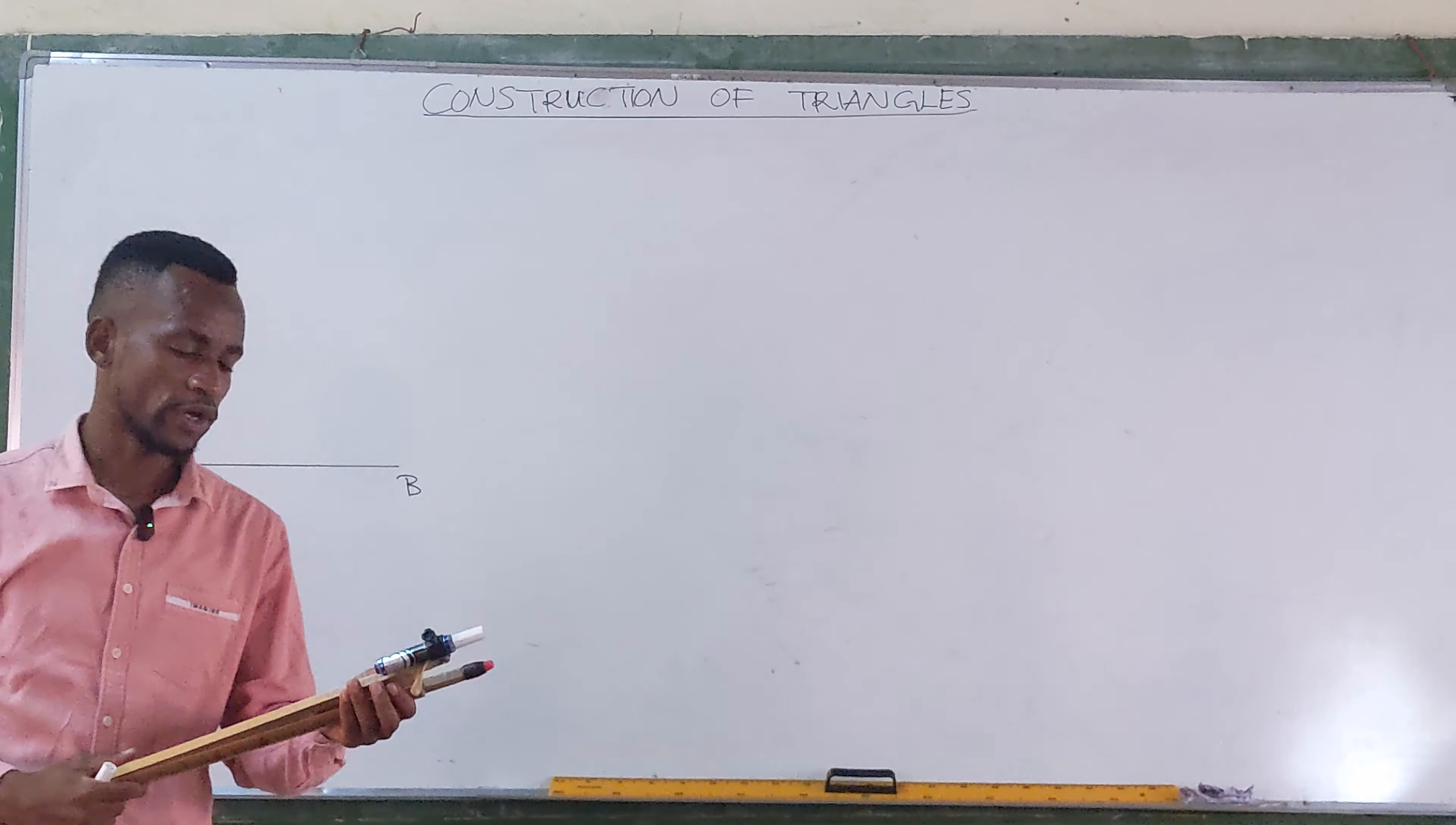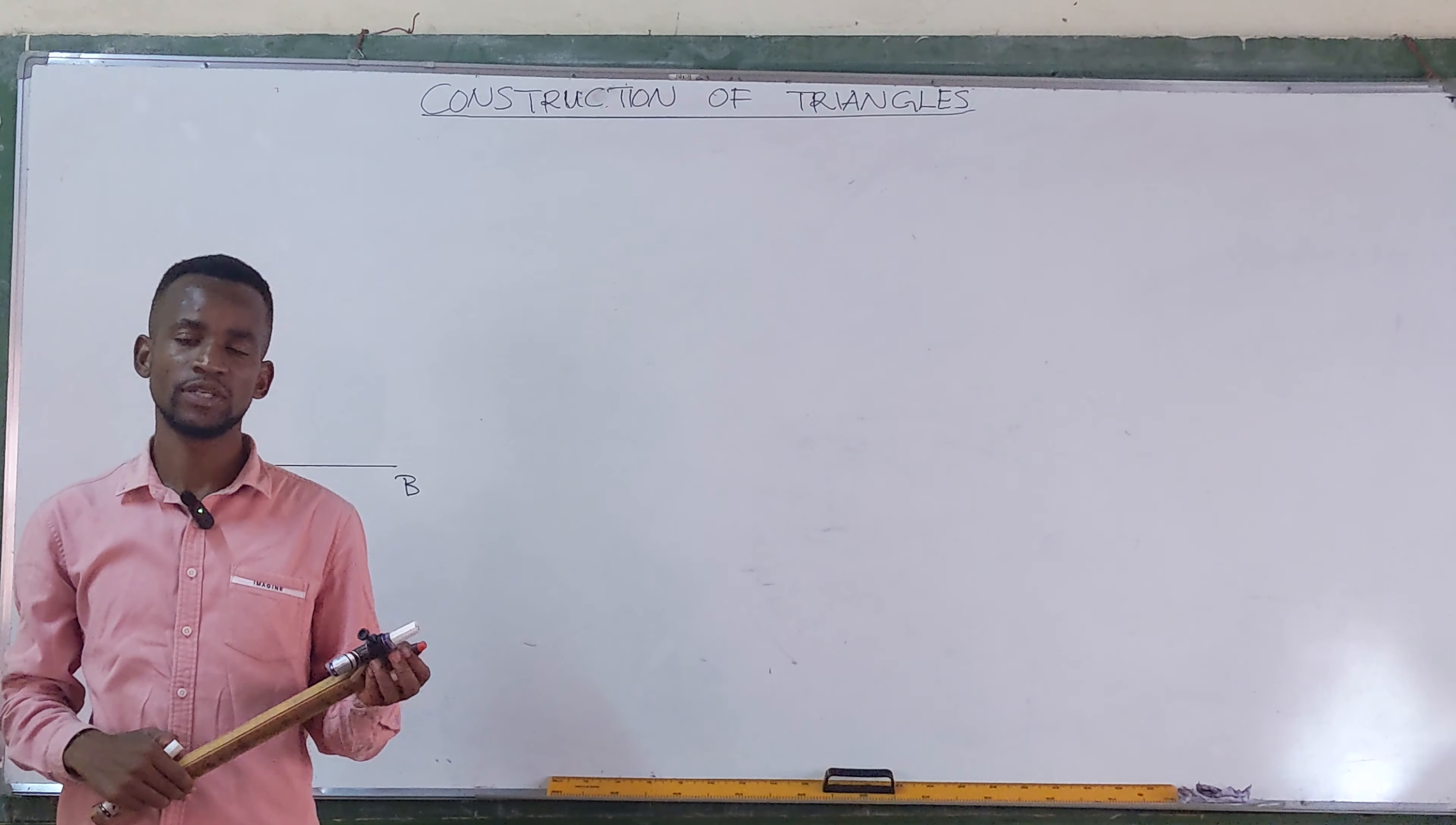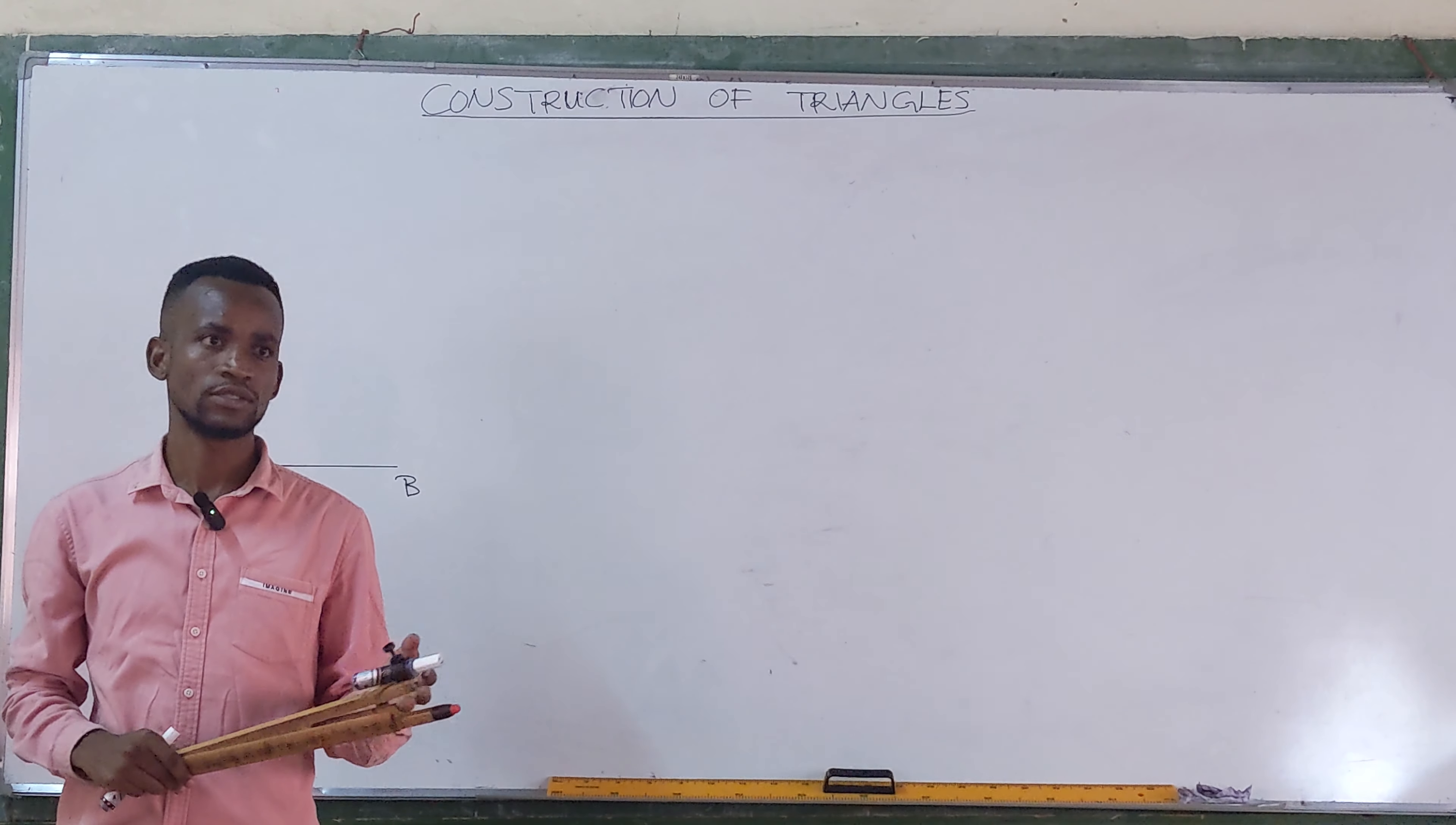Okay, now we are constructing an equilateral triangle. Meaning, if we've been given one side, then even the other two sides have been given, right? Because an equilateral triangle is a type of triangle with all the sides equal.